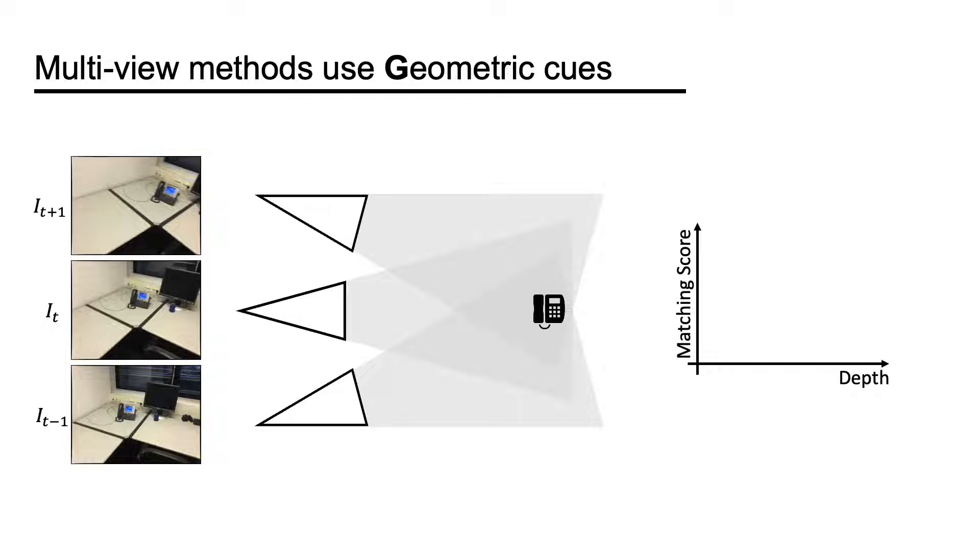Multi-view methods, on the other hand, use geometric cues. Consider a sequence of images taken in different views. For a particular pixel in the reference image, if the estimated depth is correct, the corresponding 3D point will be projected to visually similar pixels in the other images.